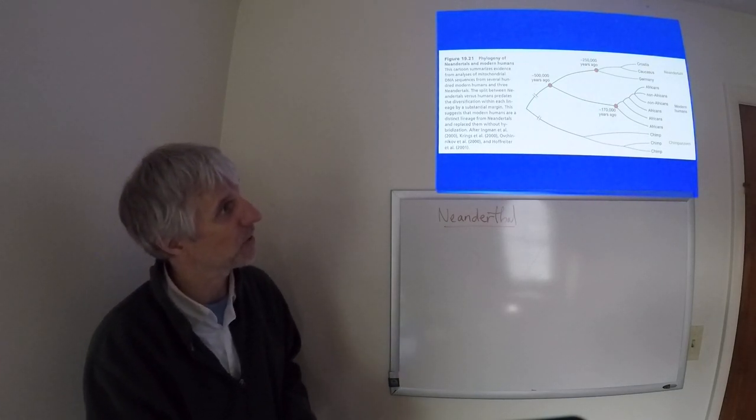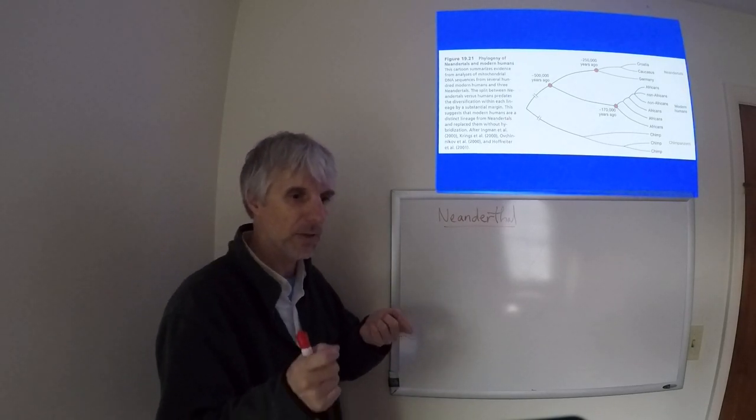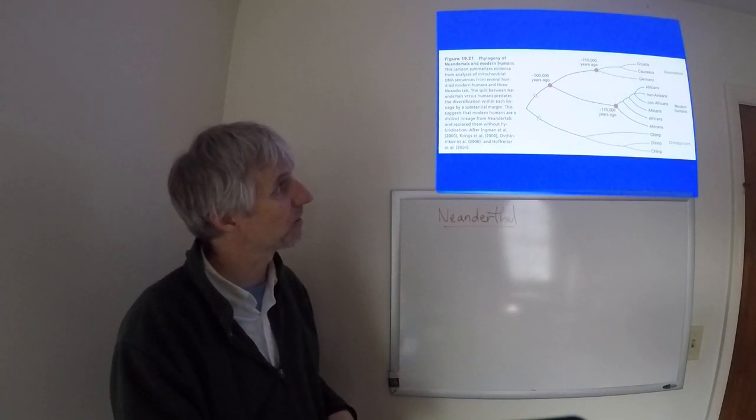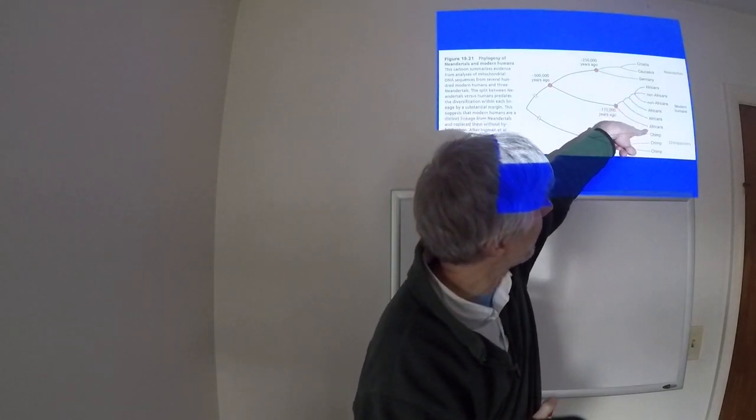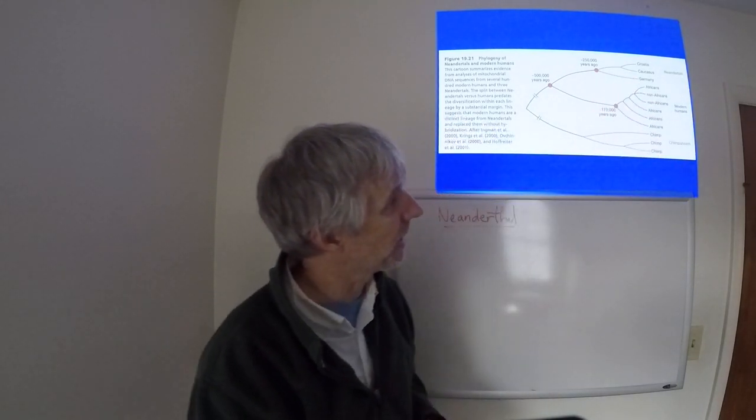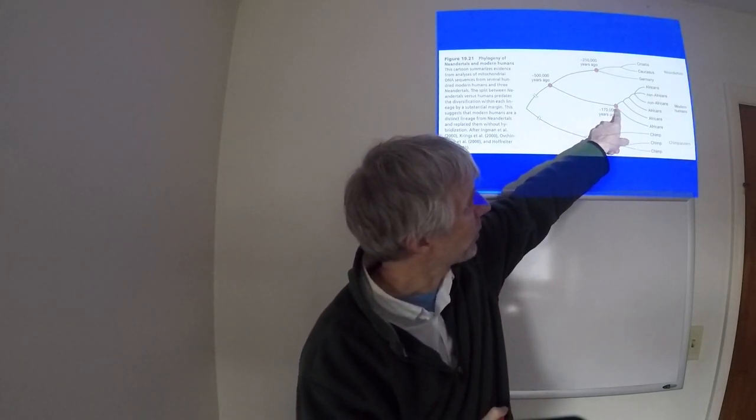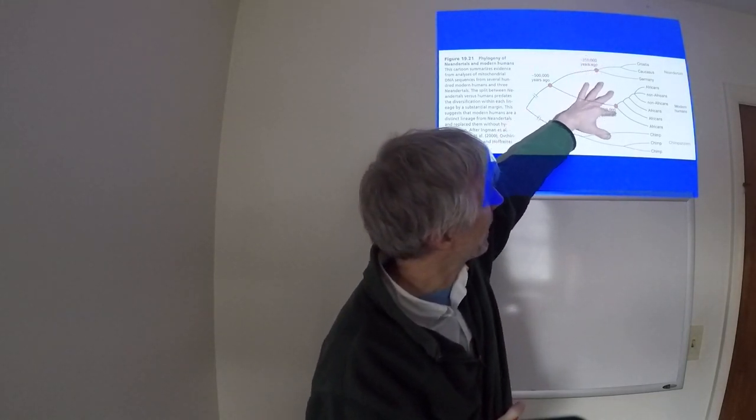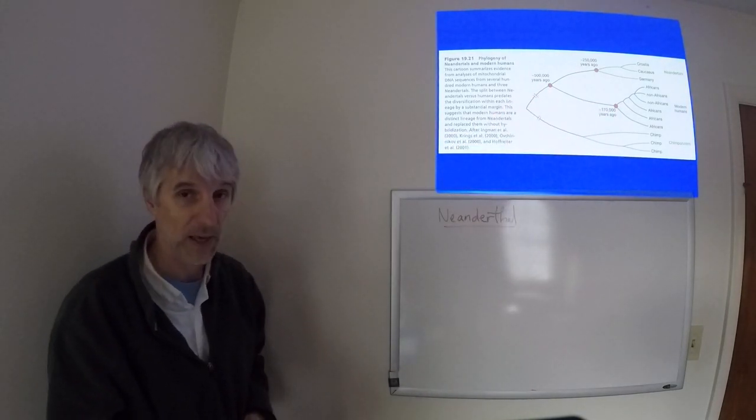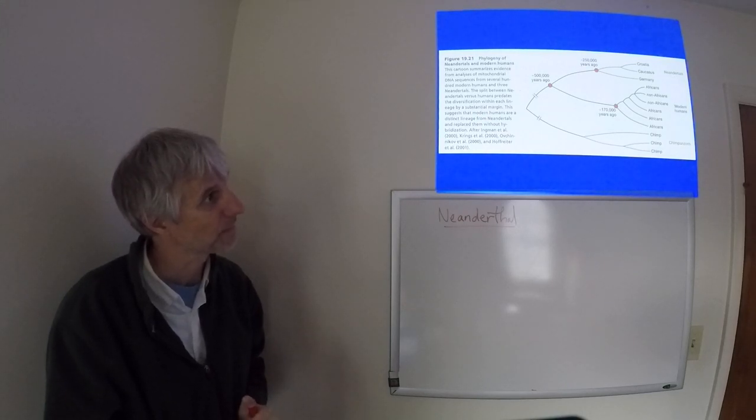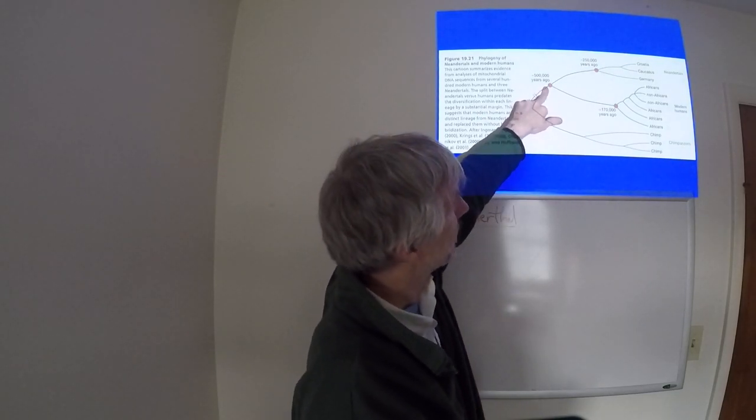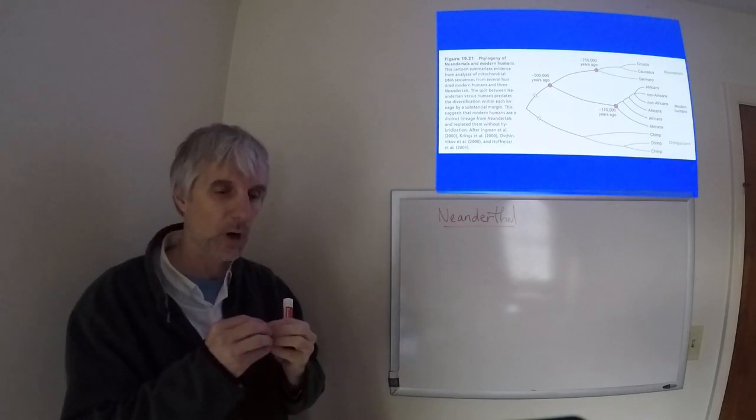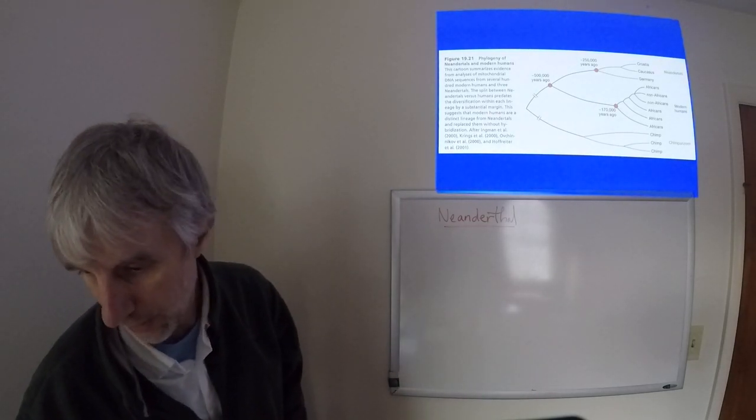So these three Neanderthals that we have, we can do a molecular clock on those three sequences and find out that these Neanderthals all had a common ancestor around 250,000 years ago. Here we look at modern humans from different locations, both Africa and non-Africa. And then based on that, the humans come together about 170,000 years ago. And the ancestor of these Neanderthals and these humans puts us around 500,000 years ago. That's the ballpark for the separation of the Neanderthals and humans. And 170,000 years ago is the ballpark for the ancestor of the modern humans.